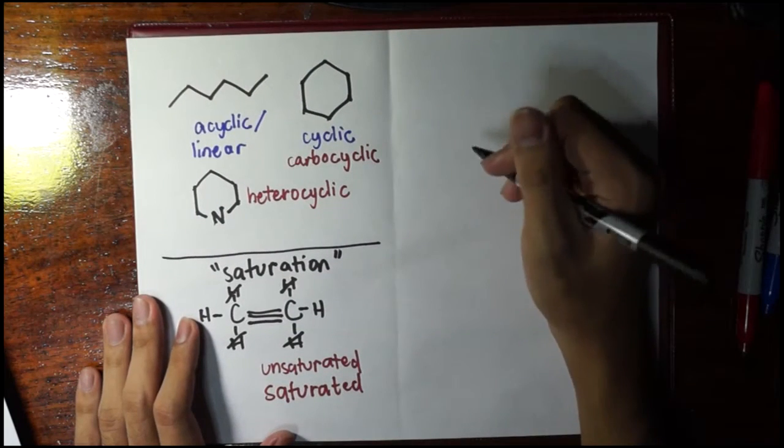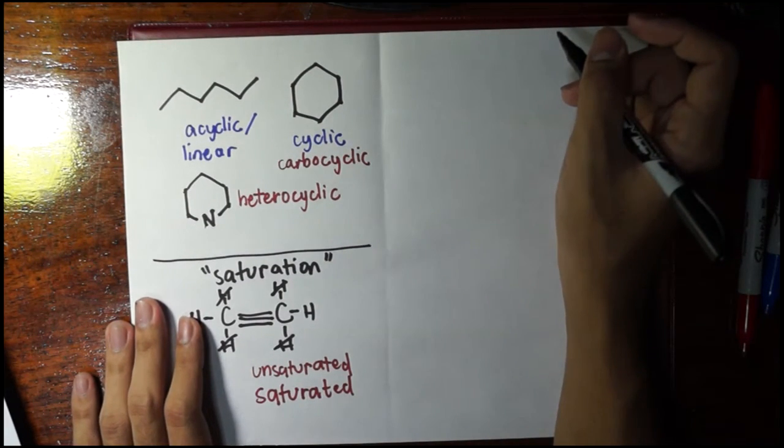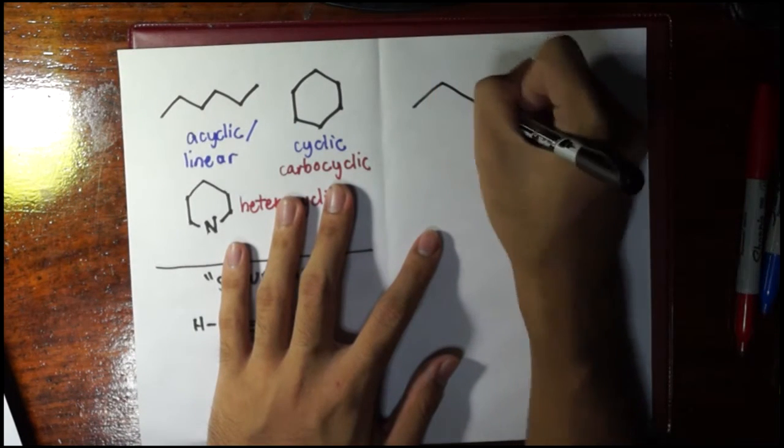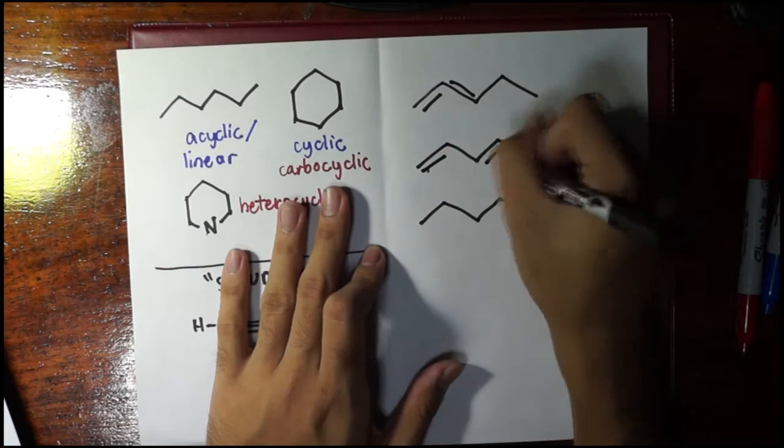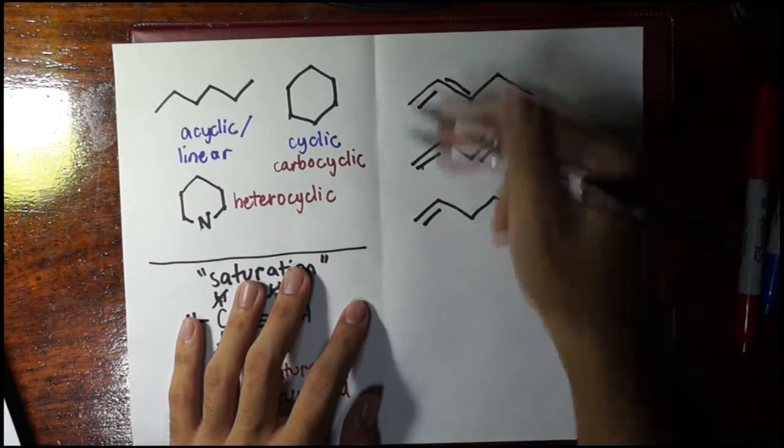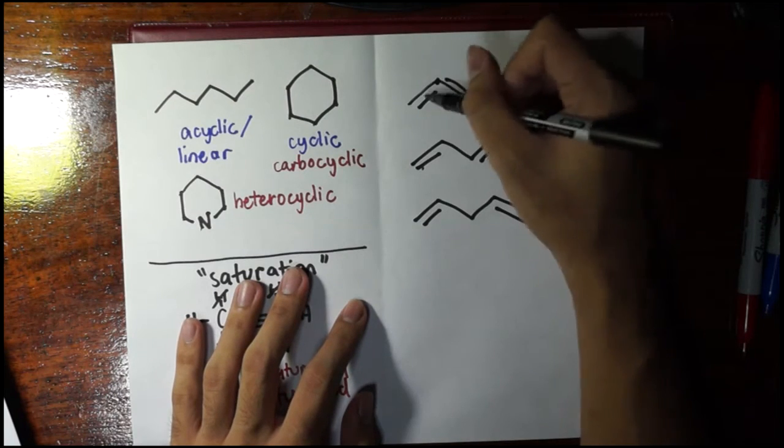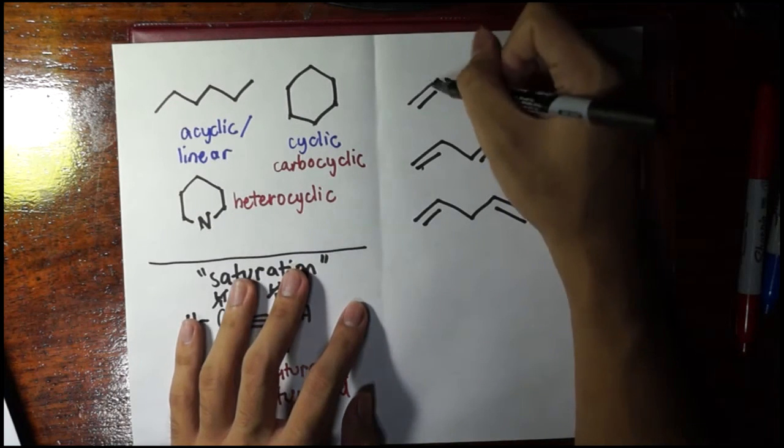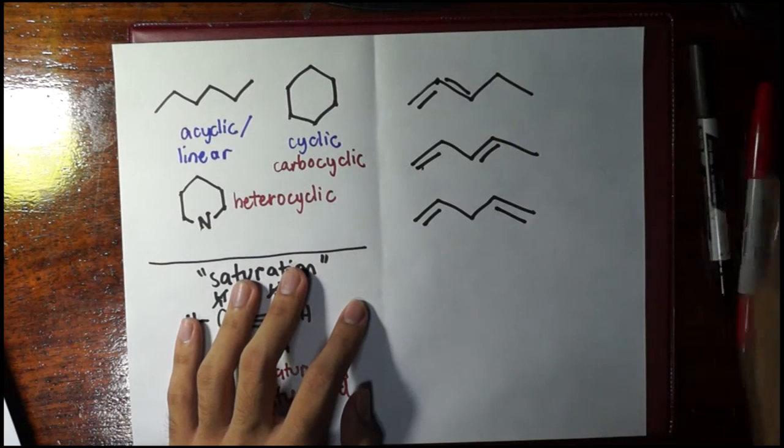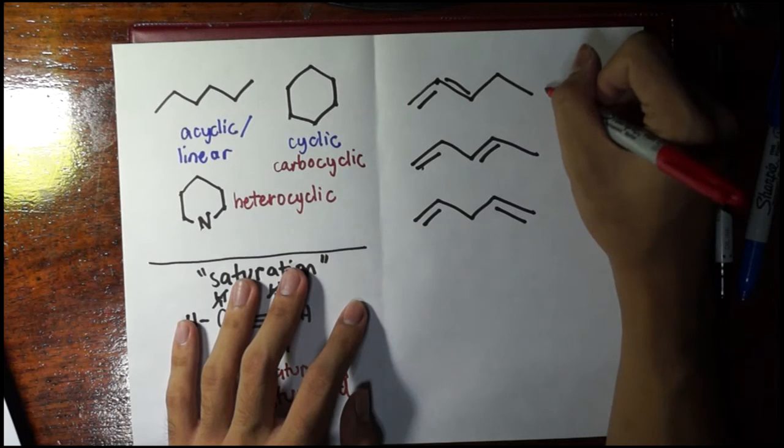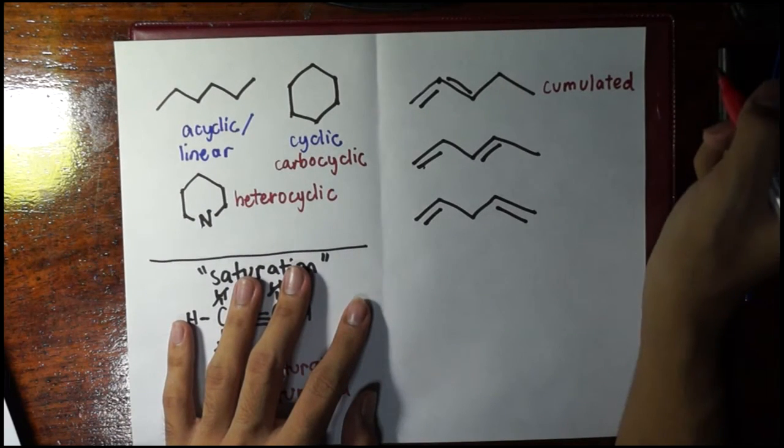Now, we have a certain classification or we have certain adjectives for compounds based on the position of their bonds. I mean, double bonds. For example, I have three examples here. Then, I'm going to draw it. Now, here, what we will look at in order to classify it is the number of intervals or the number of single bonds between these two double bonds. So, for example, in this first figure, there is no single bond between the two double bonds. They are beside each other. In that sense, you could give this the adjective of accumulated because they have compiled together, they have grouped together at the same location or almost at the similar location.